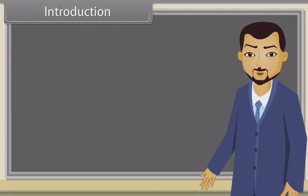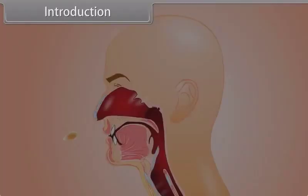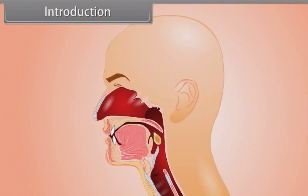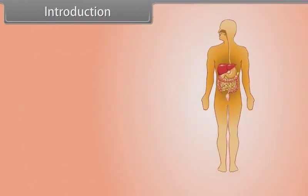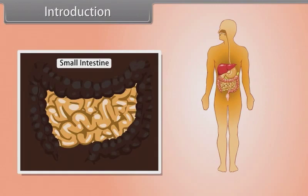Hey kids, we all know that we need energy to live and food is the primary source of energy. The process of digestion of food starts from the mouth and the action of absorption of energy majorly starts in the small intestine.